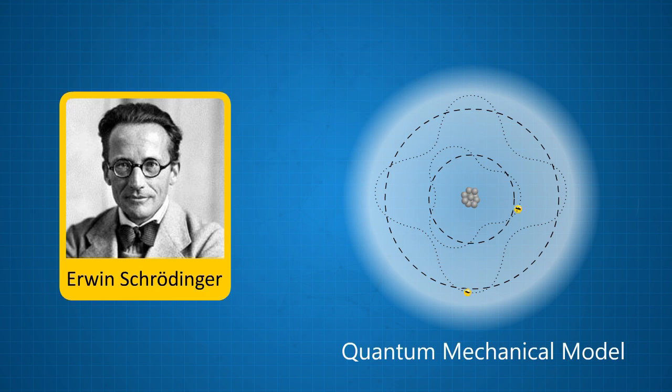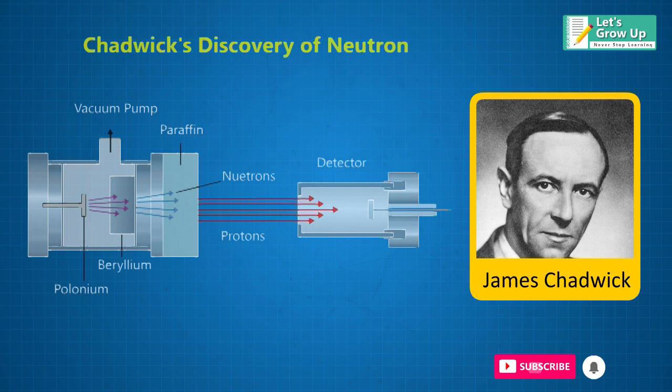So it must act like waves. Till 1932, it was believed that the atom consists of a nucleus with electrons surrounding it. But Sir James Chadwick performed an experiment by bombarding beryllium atoms with alpha particles.